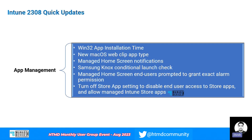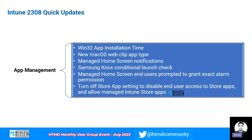Another interesting update with Win32 app capability is that you can now specify the installation time. This is an estimated installation time you can configure, and the app will proceed with the installation based on that. If the app takes longer than that time, the installation will fail with a timeout error. We will walk through these details in the demonstration.